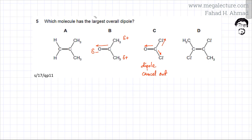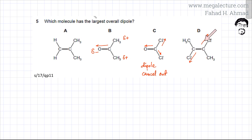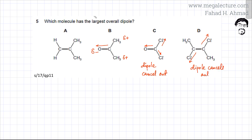Similarly, in option D, you have carbon and hydrogen atoms with a very electronegative chlorine atom attached on two ends. This chlorine is trying to pull electrons toward itself, and the other chlorine is also trying to pull electrons toward itself. Chlorine is highly electronegative, but since both chlorines are on opposite sides of the molecule, the forces of attraction cancel out. So there is not going to be any overall dipole, and the electrons remain evenly distributed.